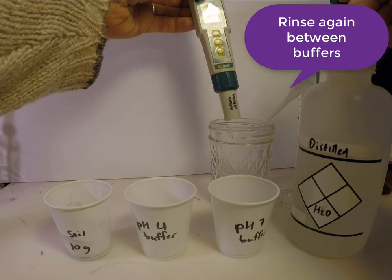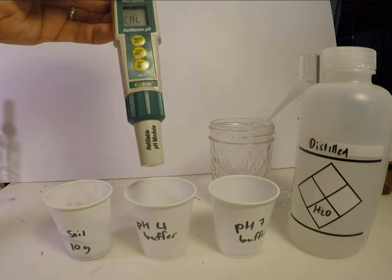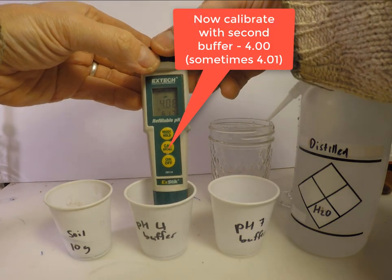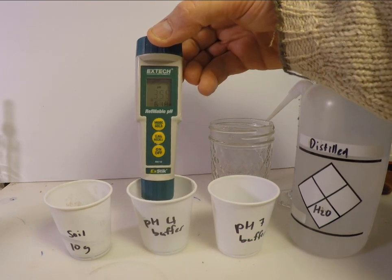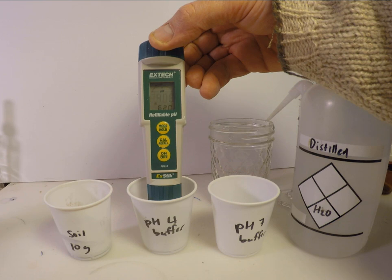After rinsing, if we then press the cal button again, the meter will wait for another buffer and will automatically detect the pH4 buffer. When this stabilizes, the meter is calibrated at two pH points, pH4 and pH7.